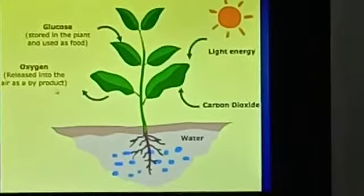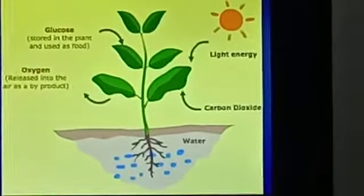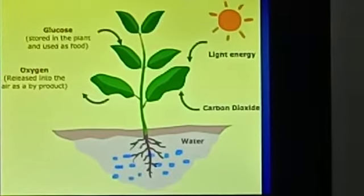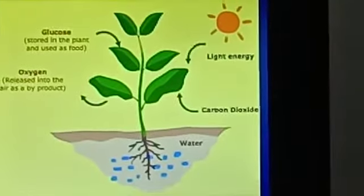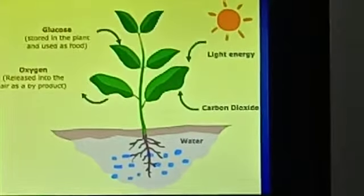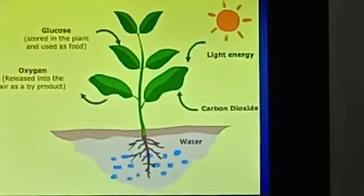Glucose gets converted to starch and is stored in fruits, roots, stem, etc.